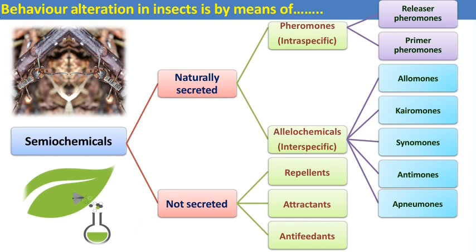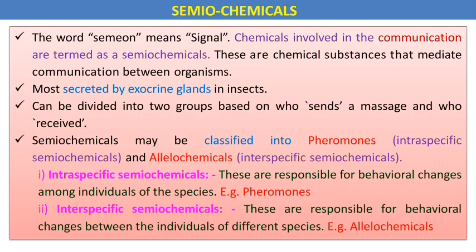Pheromones have two types: releaser pheromones and primer pheromones. Allelochemicals have five types: allomones, karomones, synomones, antimones, and apneumones. And the not-secreted category includes repellents, attractants, and antipedants.